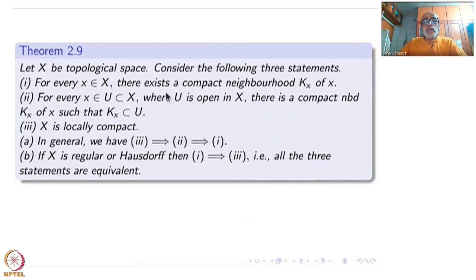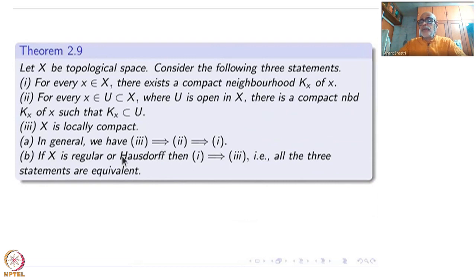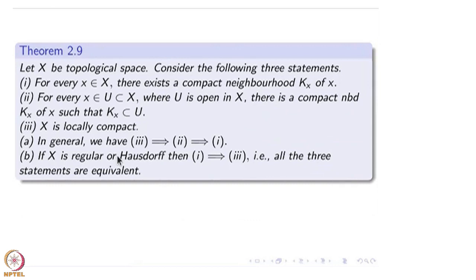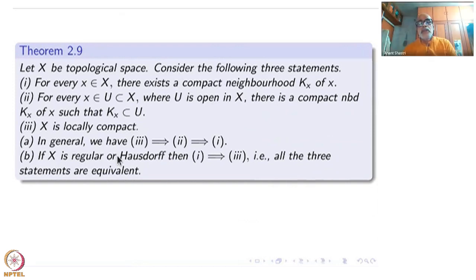What I want to show is that, assuming Hausdorffness or regularity, the weakest condition (condition 1) implies condition 3, our definition of local compactness, so these three things go hand in hand. Quite often the underlying topological space is regular or Hausdorff — there are two schools of topology, some always take regularity, some always take Hausdorff. So in that case all three definitions are equivalent, which is very important to notice, and that is why I put it as a theorem.